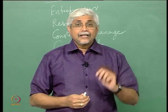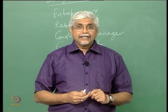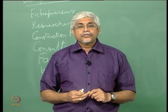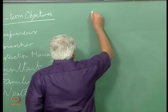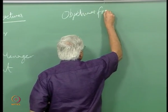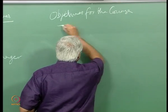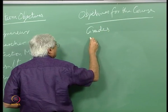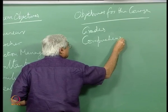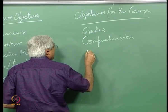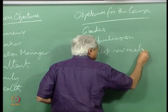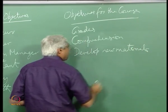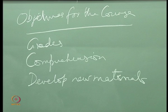Close your eyes for a minute, then put the video on pause and come back and play it again. Now, supposing you have written down what you want — and again the answers I get from class vary a lot — let us look at some of them. The objectives for the course could be as simple as getting good grades or comprehension. Students want to understand the subject, or it could be to develop new materials or to understand what can be done in terms of material science or materials engineering.